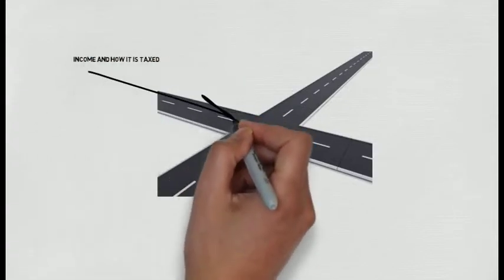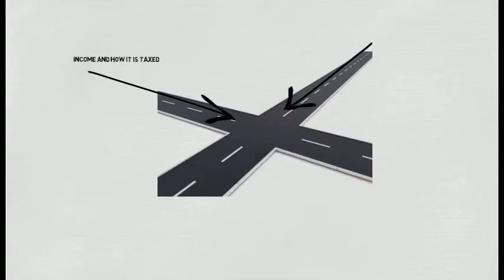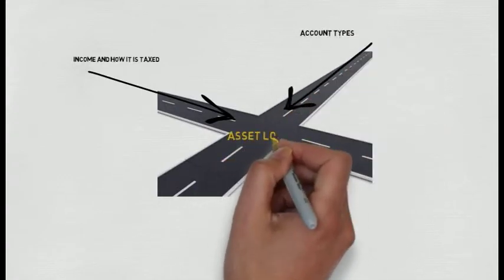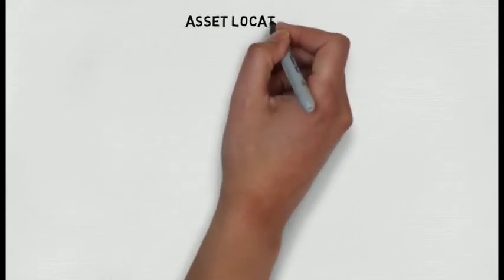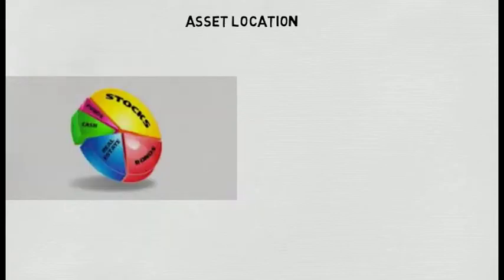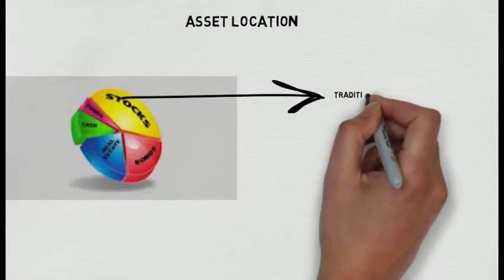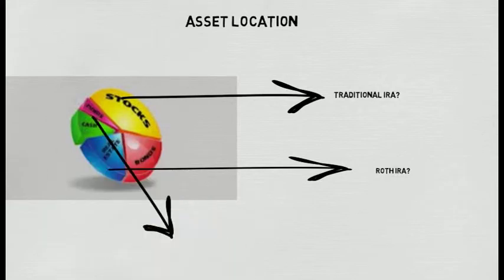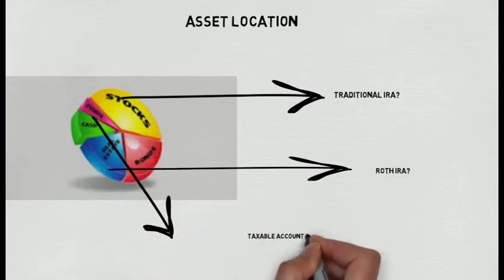The next thing is to look at the intersection between the types of income that is produced and the way it is taxed and the types of accounts. This is what we call asset location. Asset location means when we diversify your portfolio and use asset allocation and diversification, where do we place the different investments?